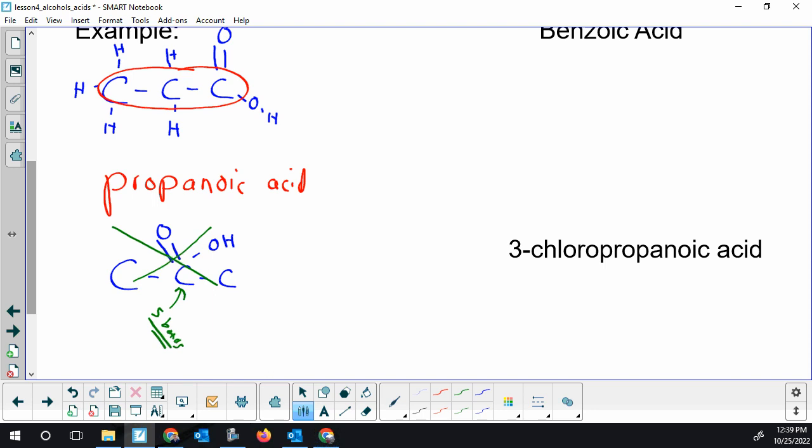So it has to be at the end. So we're never going to need to put a number there. The number that's missing is always a one. And this carbon has to be our one carbon, our two, and our three. So when we set our numbers, never start numbering from the far end from the carboxy.